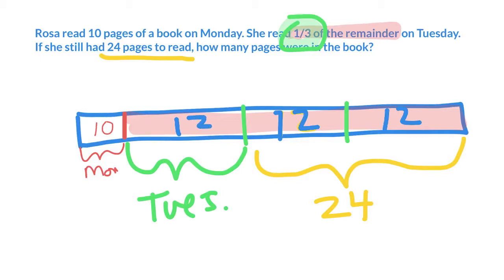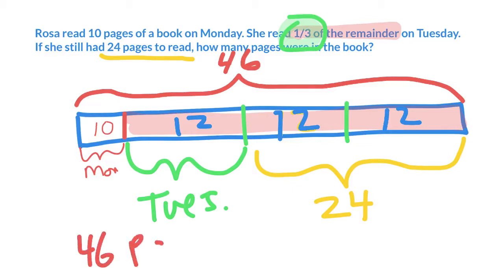Now, can I solve for the whole book? Yeah. Yeah, because I have this 10 and these three 12s all add up to 46. So I know that the book has 46 pages.